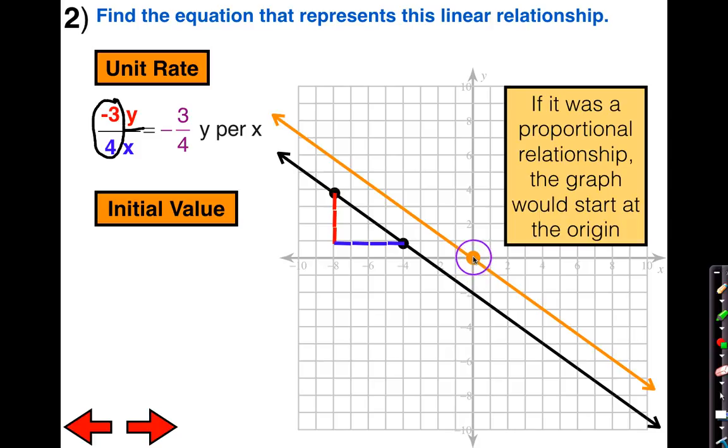If this was the case, the equation of the orange line would be in the form of y equals kx. The equation of the orange line would then be y equals negative 3 fourths x.